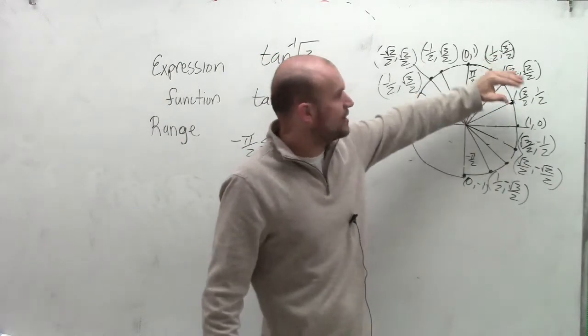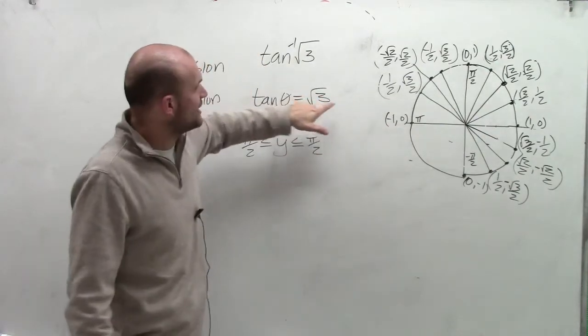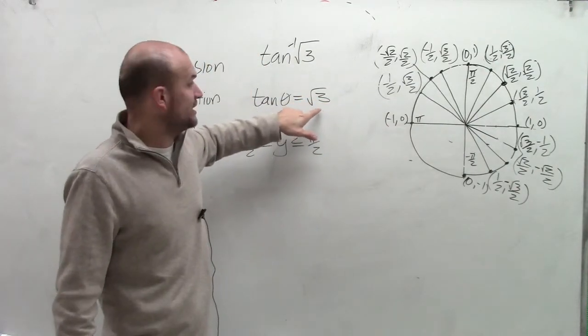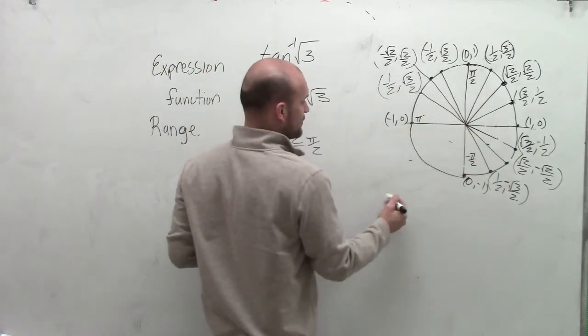Then when I take the y coordinate over the x coordinate, what is the angle that will provide square root of 3 as the answer? If I look at the angle π/3,